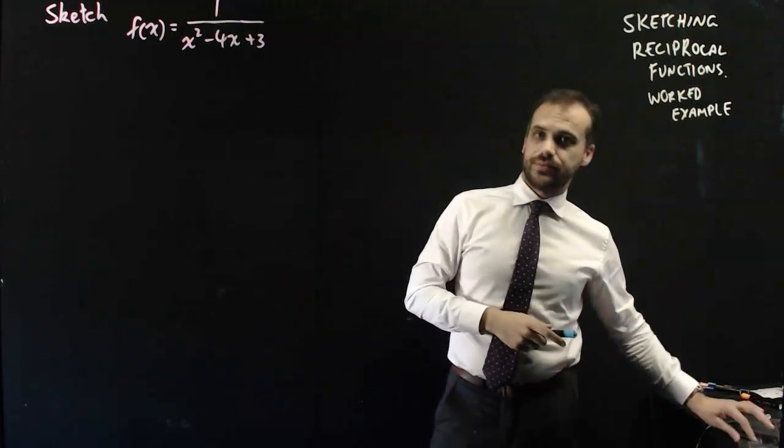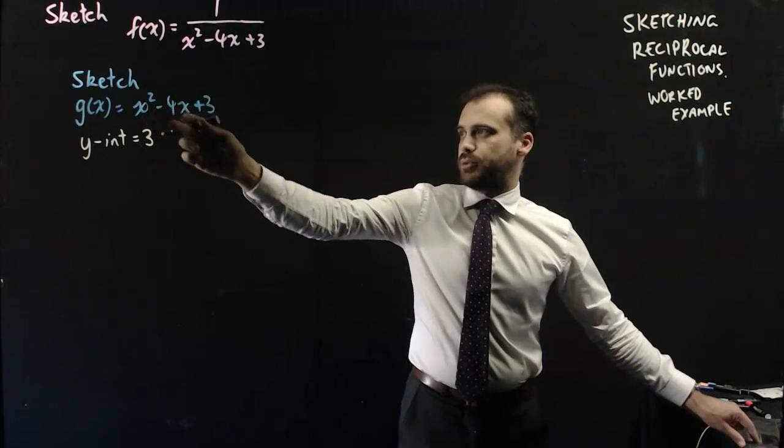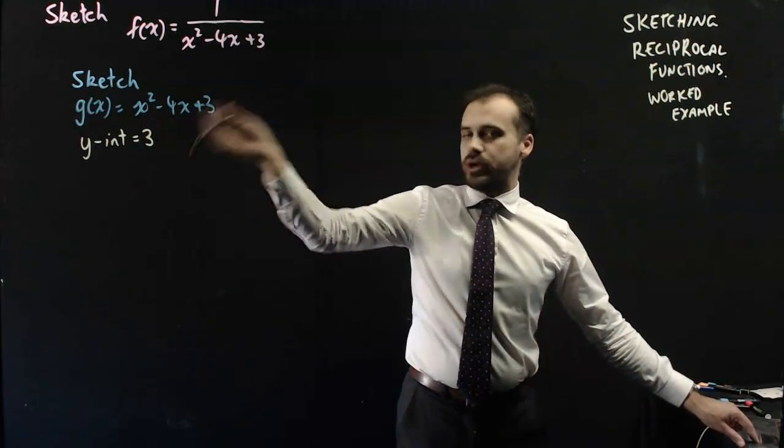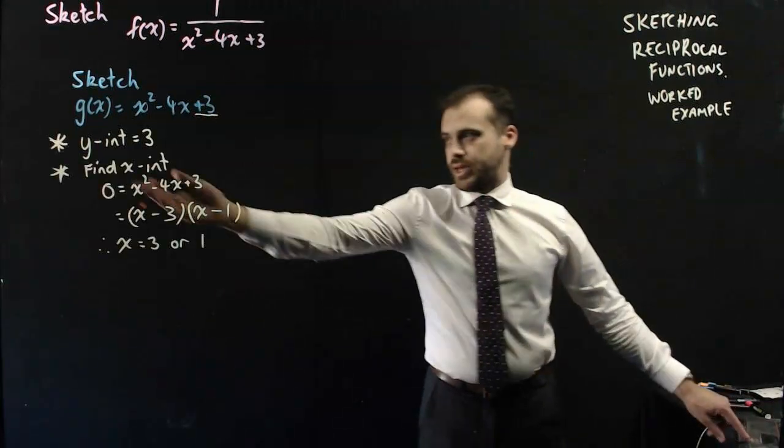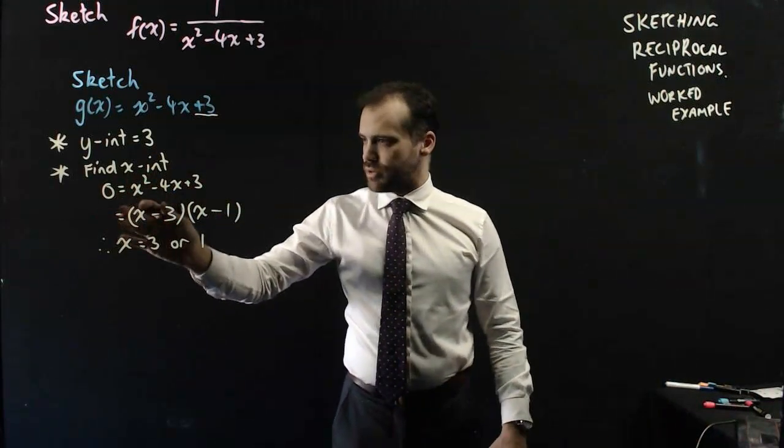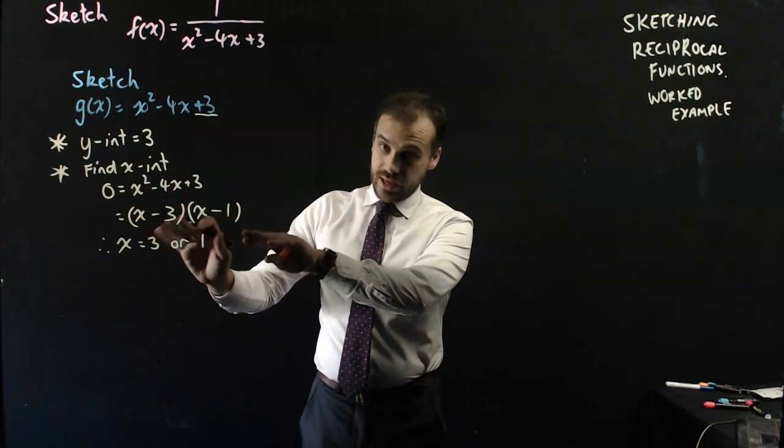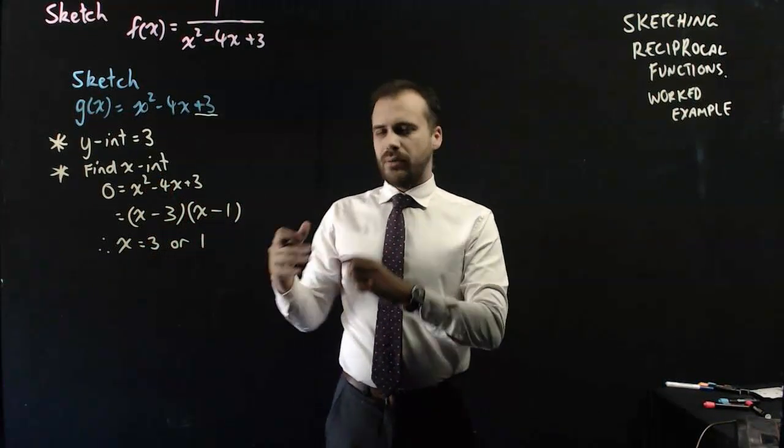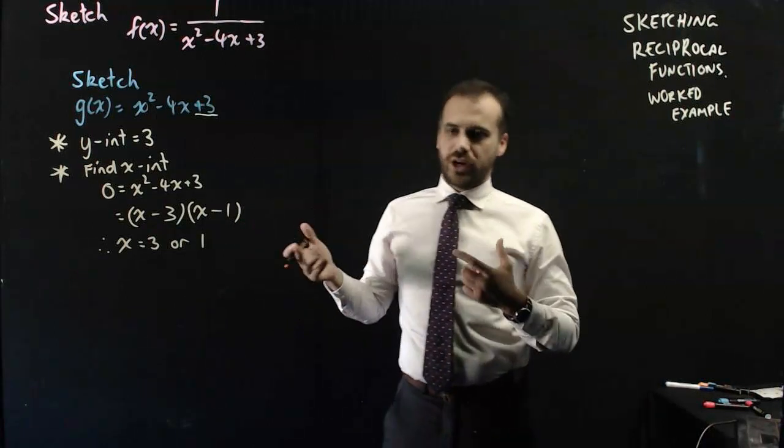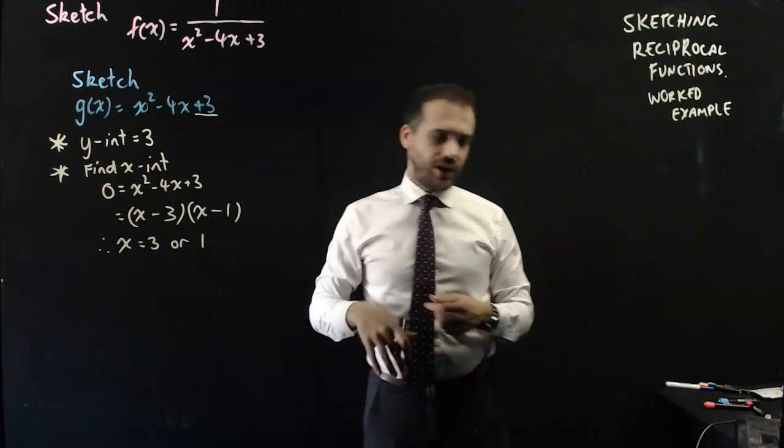So sketching it. Sketching g(x) = x² - 4x + 3, which is the bottom. The y-intercept is going to be equal to 3. Now, I found the x-intercepts by letting y equal 0. It can be factorised, and I solve it and I get 3 or 1. I might have had to use completing the square or the quadratic formula, but I got lucky here, you can factorise it.